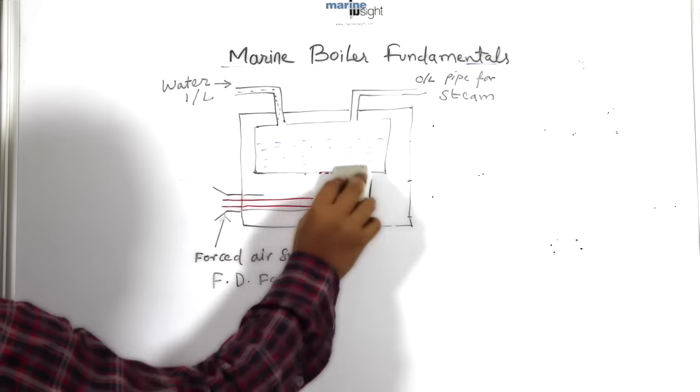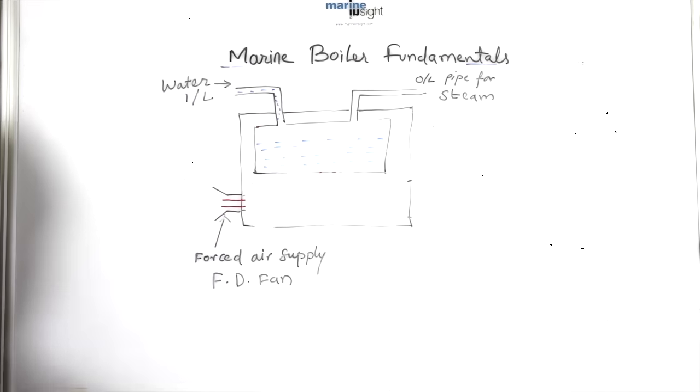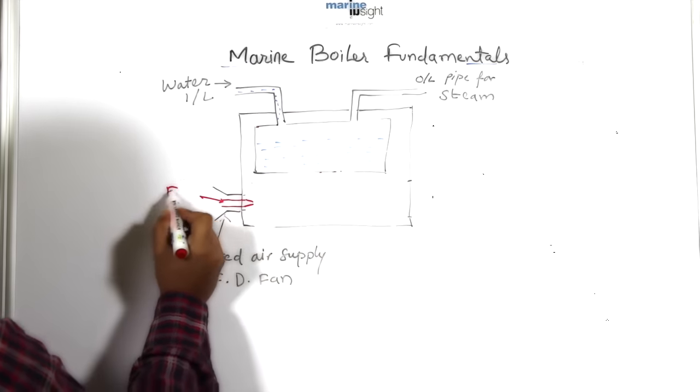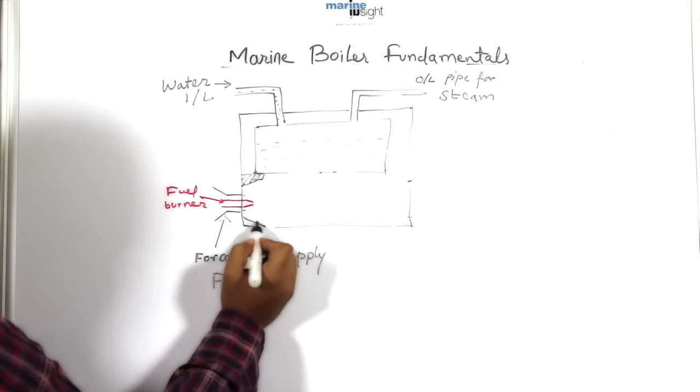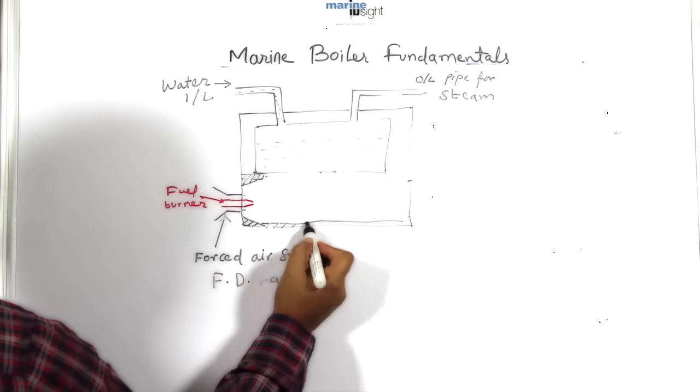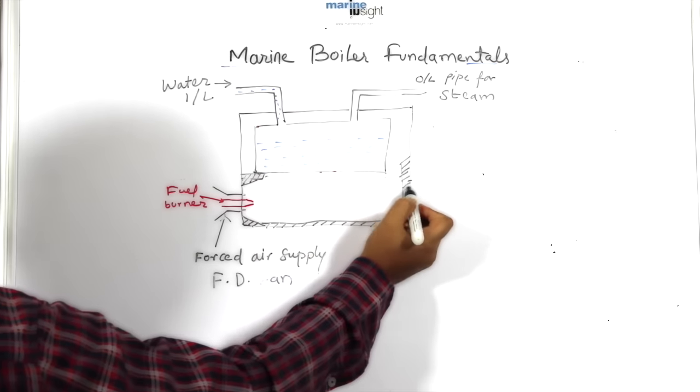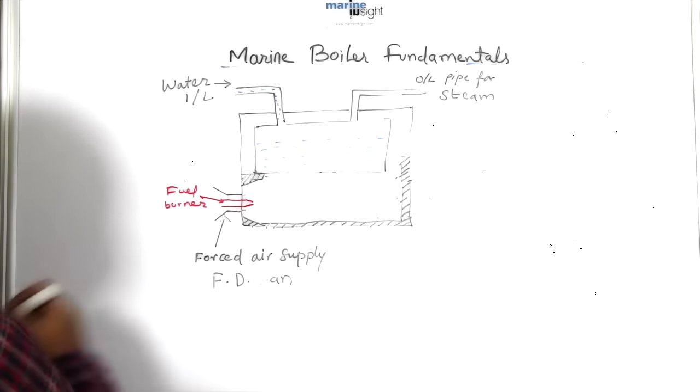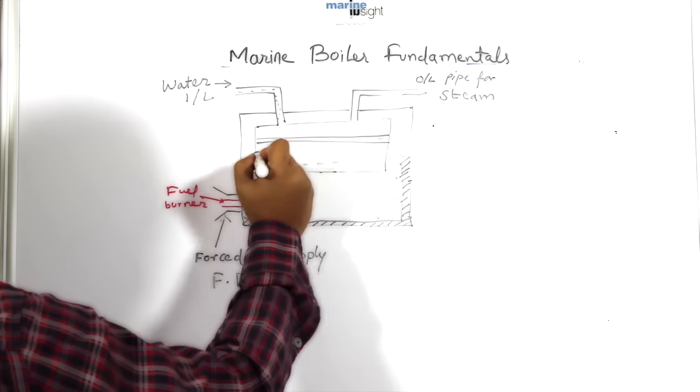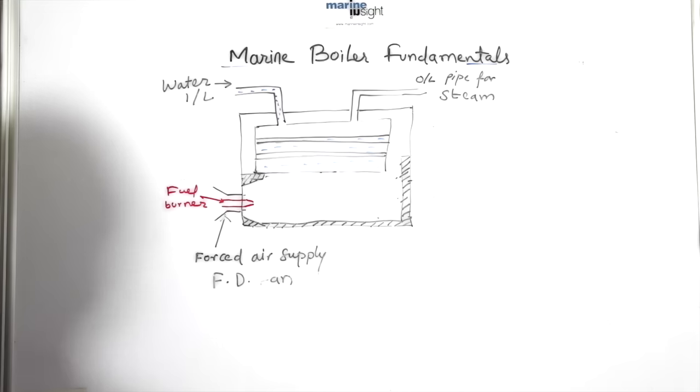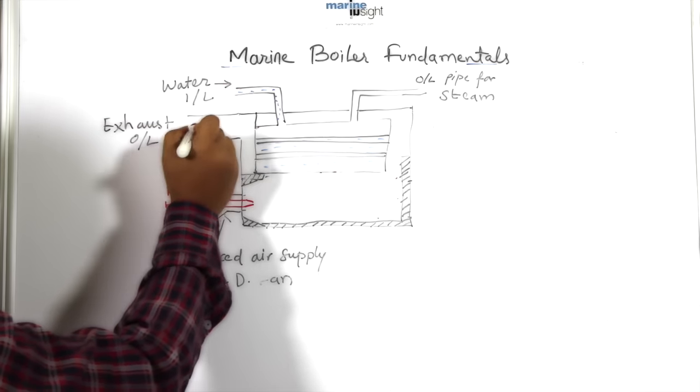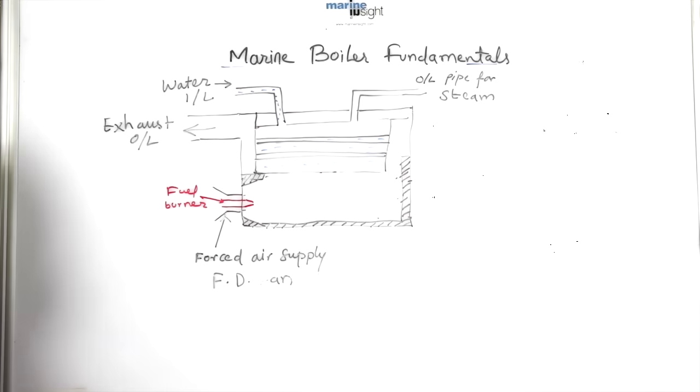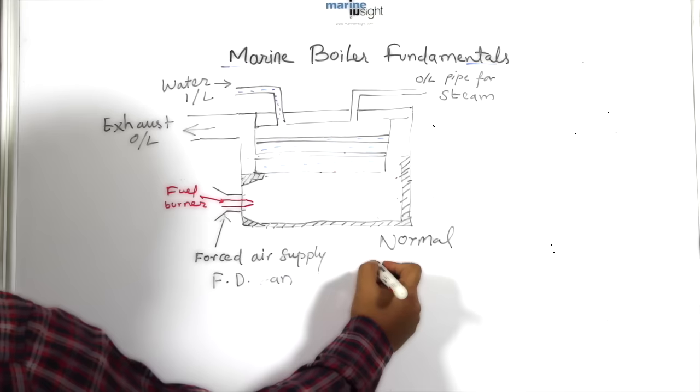But it is also important to make this arrangement more efficient by introducing a few modifications: the burner assembly, integration of heat resistant refractory in the furnace, smoke tubes in the water drum to increase the heat exchange ability of the boiler, and an exhaust gas trunk to take out the exhaust smoke to the atmosphere. This is the general layout of a normal smoke tube boiler.